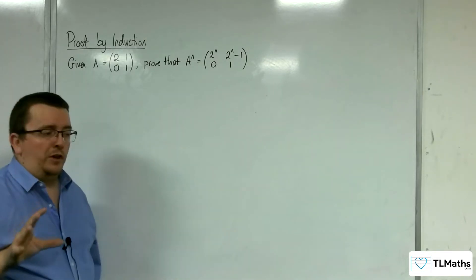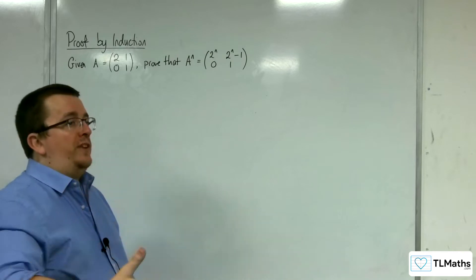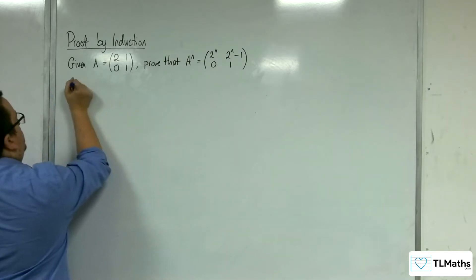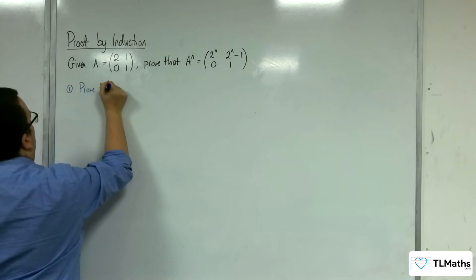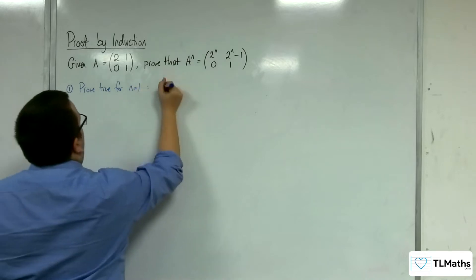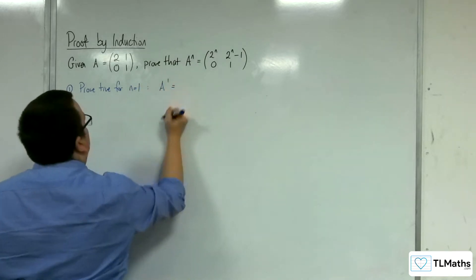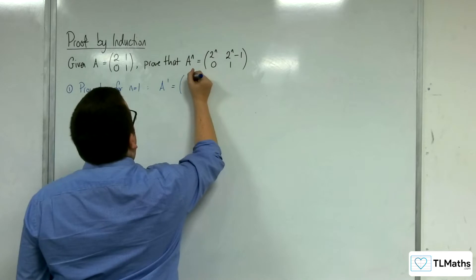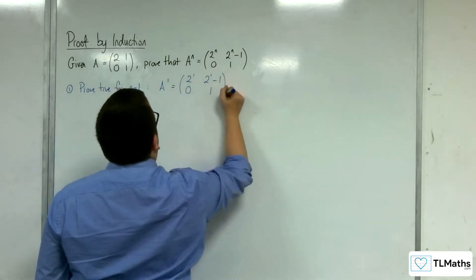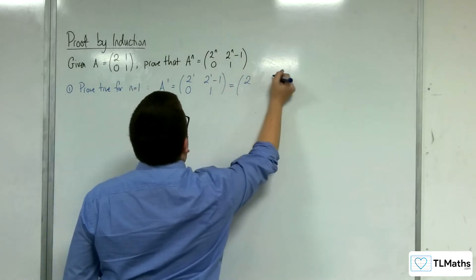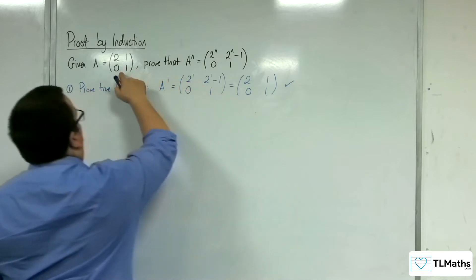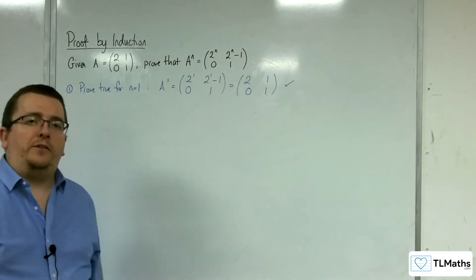Let's go through the steps of induction. Stage 1: prove true for n equals 1. A^1 would be [2^1, 2^1 - 1; 0, 1], which of course is [2, 1; 0, 1]. This is precisely what we had originally, so we know it works there.